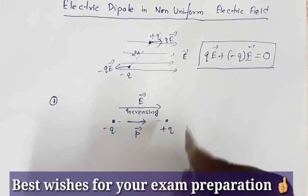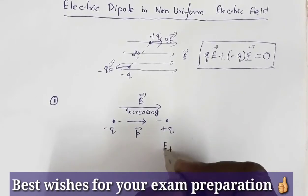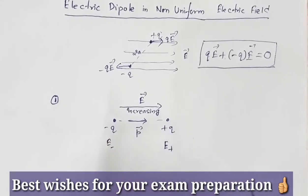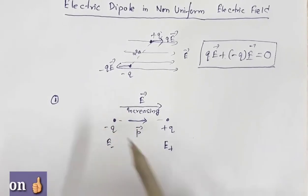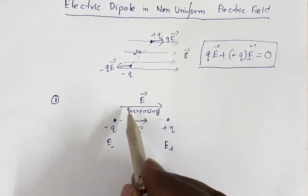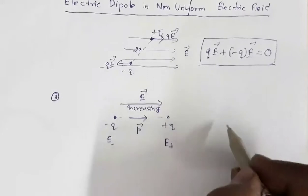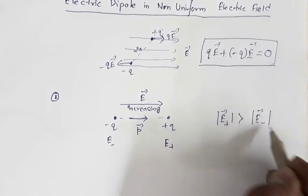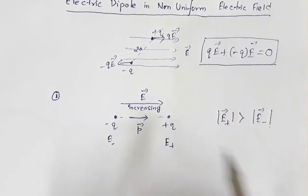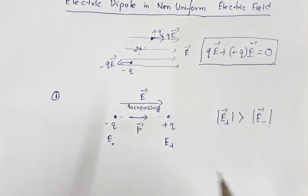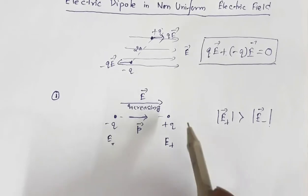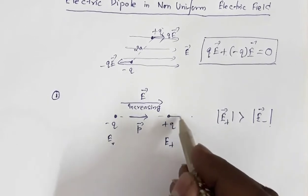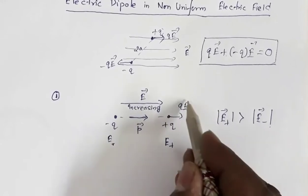Let E-plus be the value of electric field at the site of the positive charge, and E-minus be the value of electric field at the site of the negative charge. Since the electric field is increasing in this direction, the magnitude of E-plus will be greater than the magnitude of E-minus. The positive charge will experience a force QE-plus in the direction of the electric field.